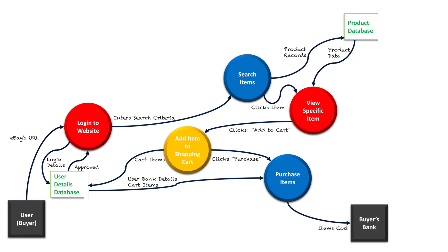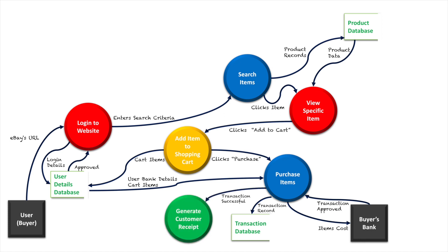Once we have their bank details, we can access the actual bank of the buyer. The item cost is requested from the bank, and then a transaction approval returns saying the items have been purchased. This is recorded in a transaction database, and once it's recorded, we need to generate a customer receipt as proof of transaction, which is sent to the customer. Receipt data may also be tracked to the user's account. All of this so far is pretty standard for any online shopping system that uses e-commerce.